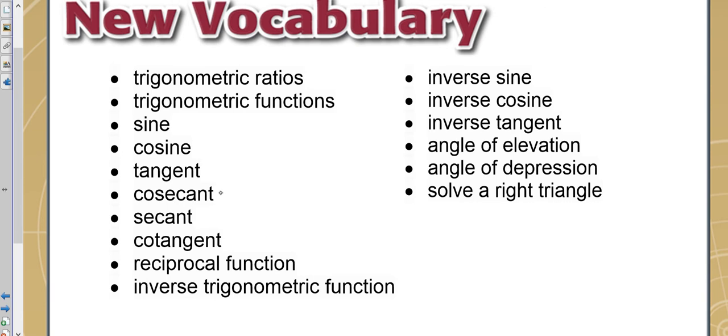These things are real simple. Cosecant is the same thing as 1 over sine. And that theta, that's just what we use to say it's an unknown angle. It's kind of like x, but if it's an angle, we'll use theta. Secant would be 1 over cosine. And cotangent is equal to 1 over tangent.